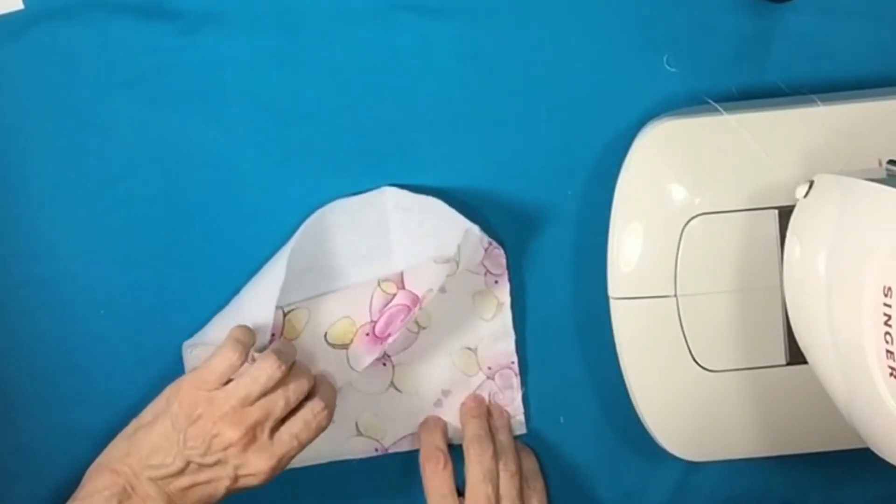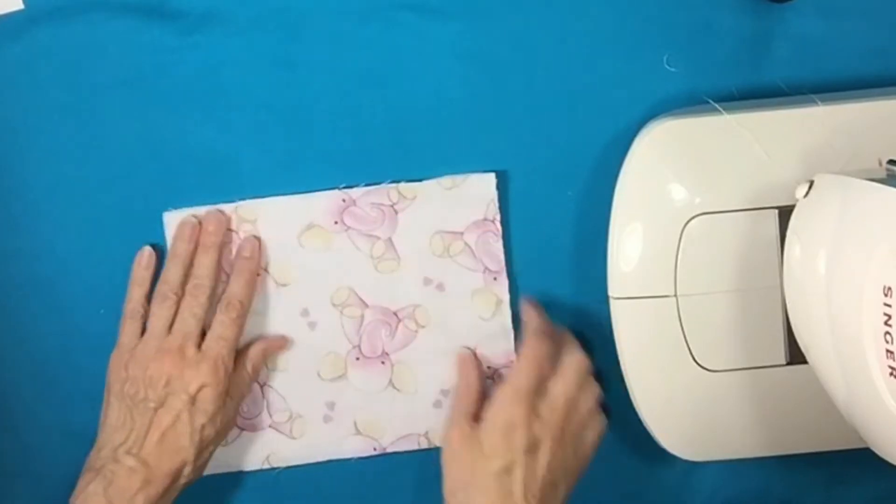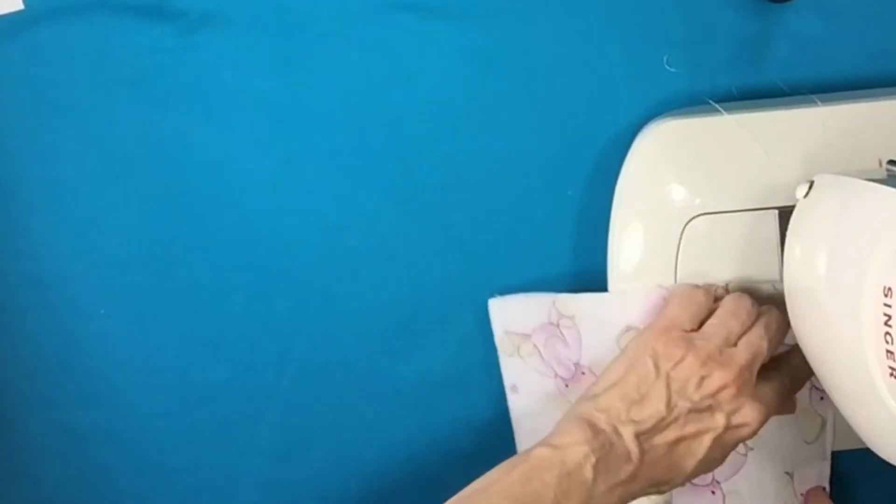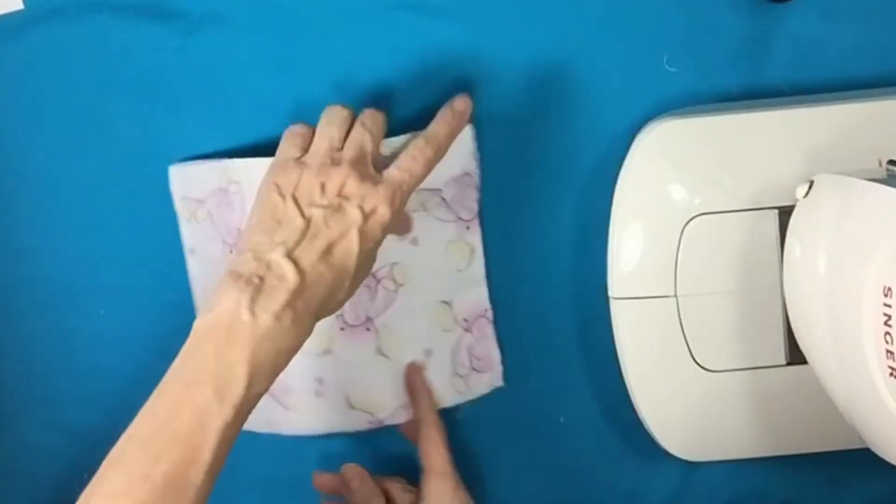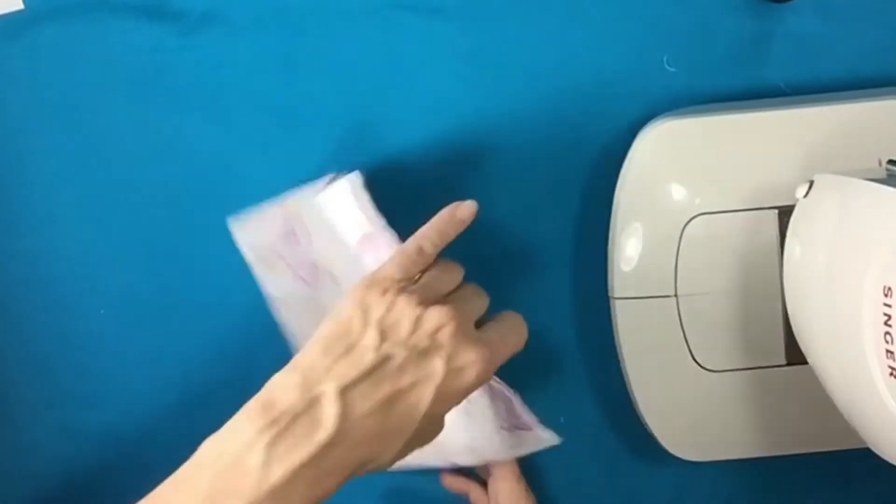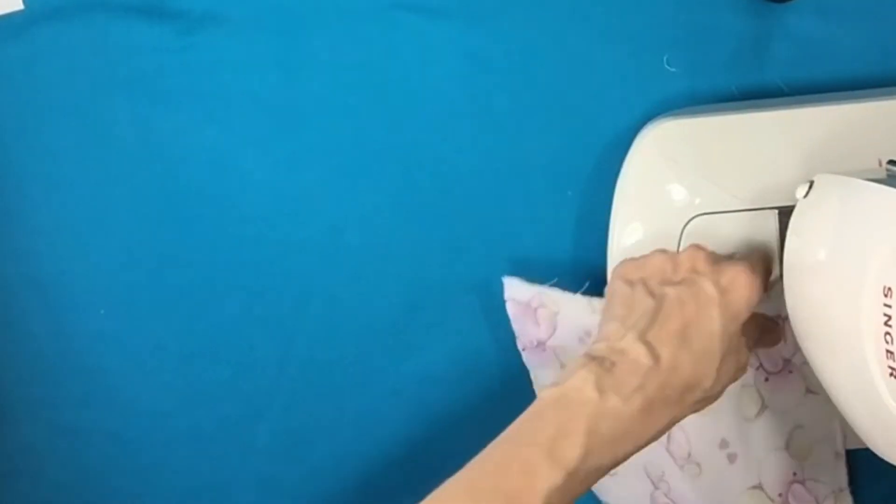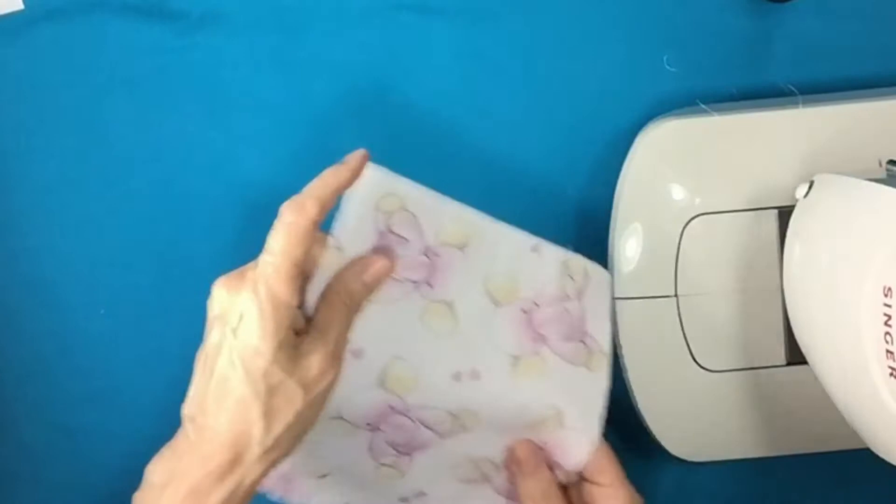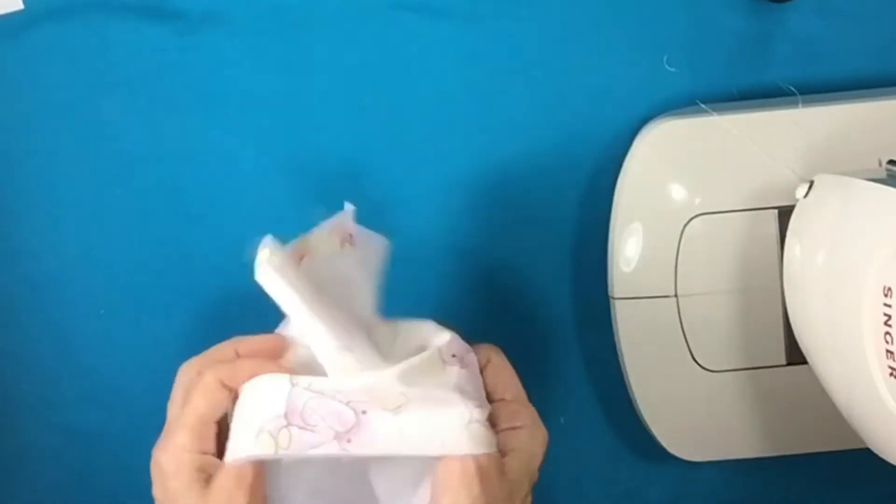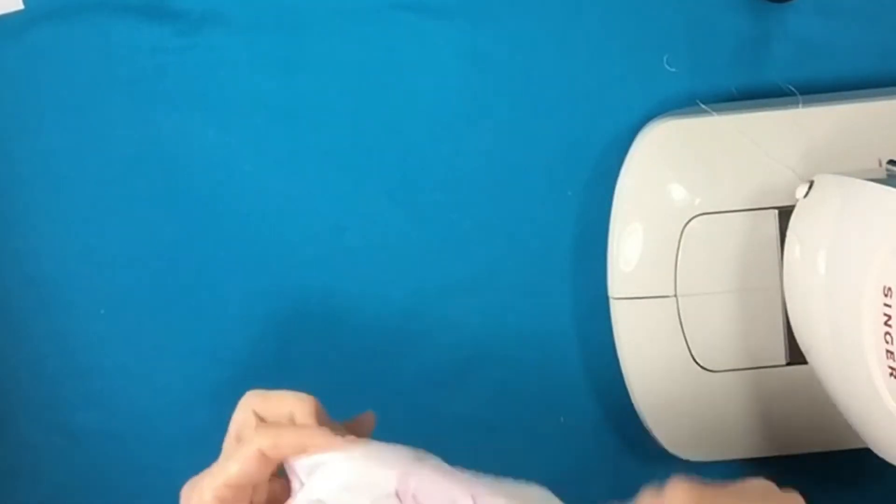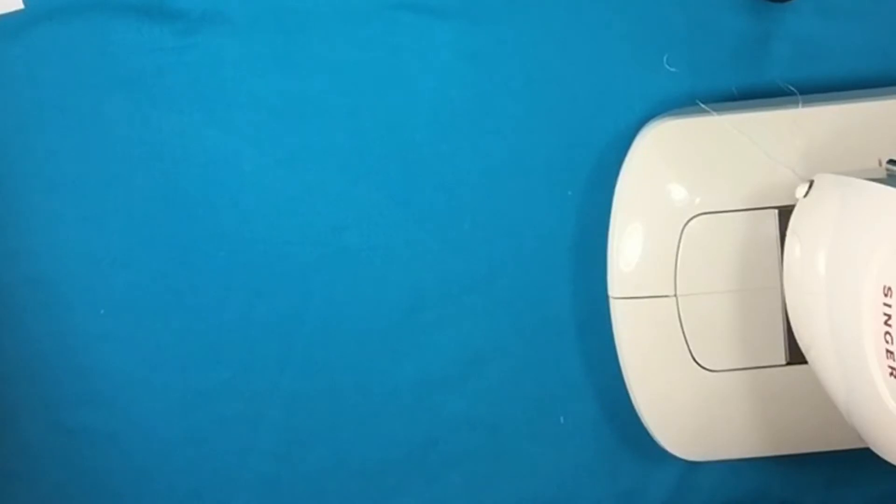We are going to put right sides together and sew on each side. You want to make sure it's on the six and a half inch side that you're sewing. And then on this side, we're going to turn it inside out and we're going to press it down.